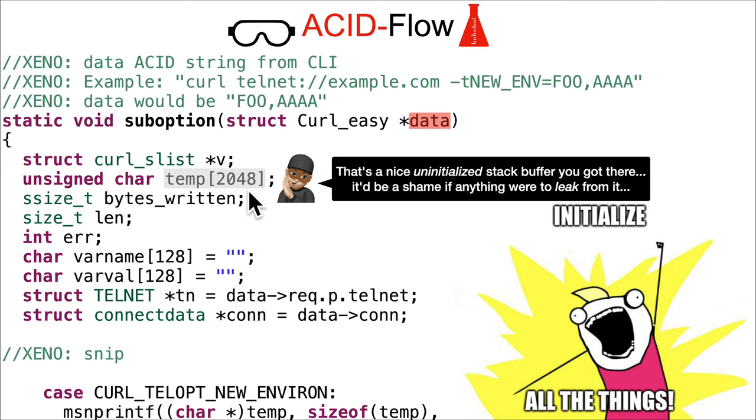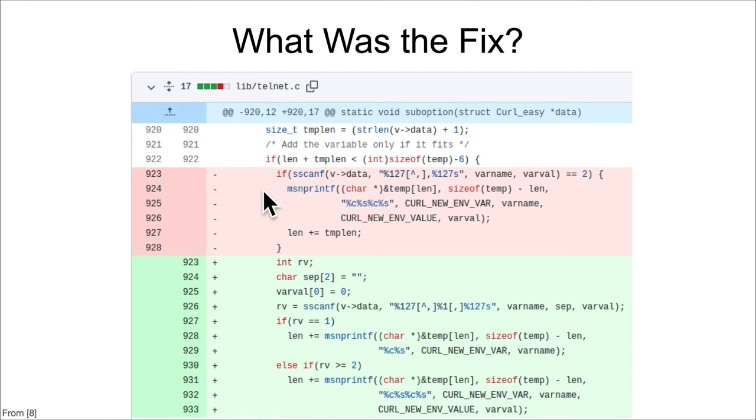So what was the fix for this? Well, they changed it. Now instead of looking specifically for equal to two, it calls the sscanf and then checks a return value. If the return value is one, then it just puts in the first string, and if the return value is greater than or equal to two, then it puts in the varname and the varvalue. You can see they also introduced this sep, or I assume separator, as this percent one here in the middle. And quite frankly, I didn't really look into what that is and what its purpose is or anything else.